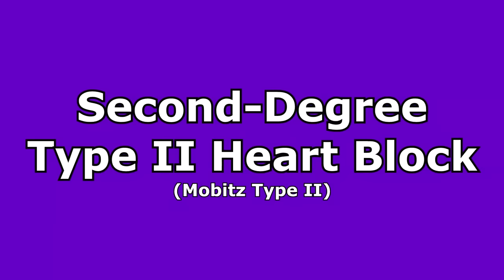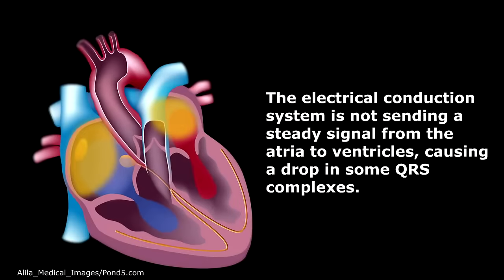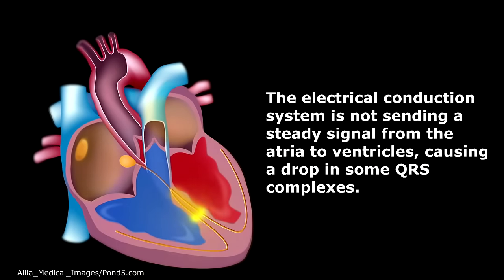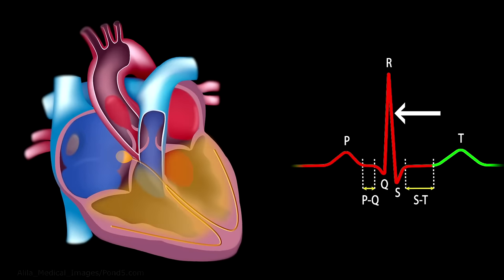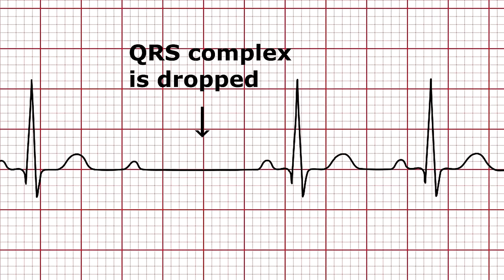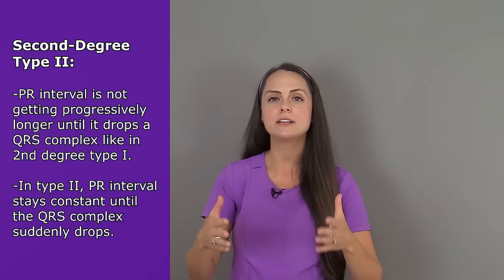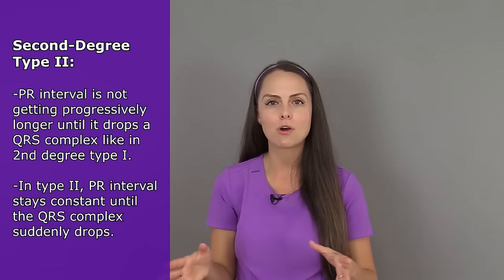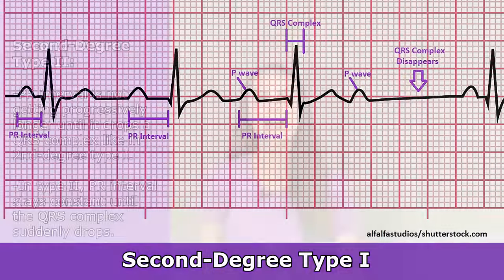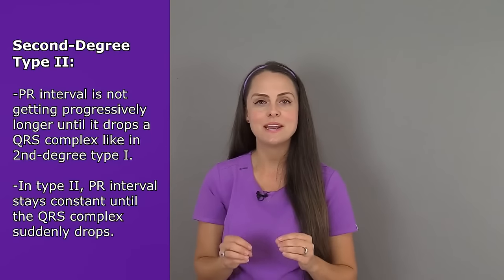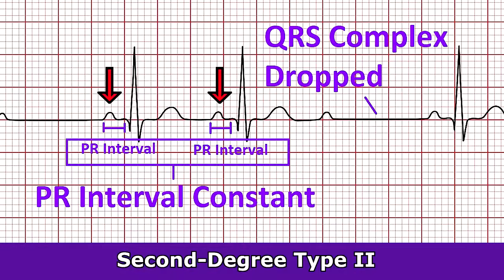Now let's look at second-degree type 2, also known as Mobitz type 2. This rhythm occurs because the electrical conduction system is not sending a steady signal from the atria to the ventricles, causing us to lose a QRS complex. Unlike second-degree type 1, the PR interval does not progressively lengthen before dropping a QRS. Instead, in second-degree type 2, the PR interval stays constant throughout the rhythm and then we lose a QRS complex at some point.